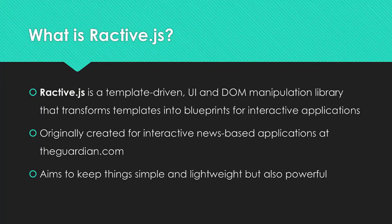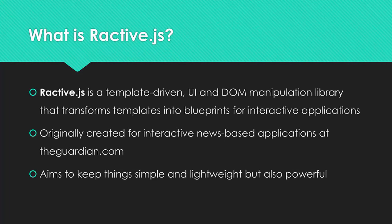So what it is — it's a template-driven UI and DOM manipulation library. DOM meaning the document object model. It basically transforms templates into blueprints for interactive applications. We break our UI up into templates which combine standard HTML with dynamic mustache elements. And if you've used mustache templating before, the syntax will come very easily, which is pretty easy to begin with.